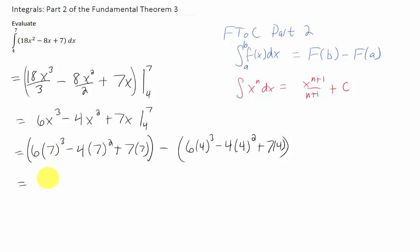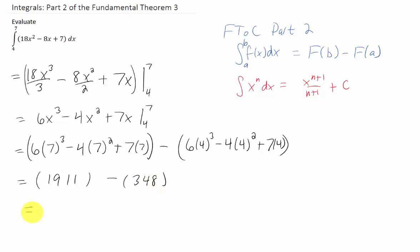My calculator says that this first number here is 1911, and that the second number is 348. And if we subtract those two numbers, we get 1563 as our final answer.